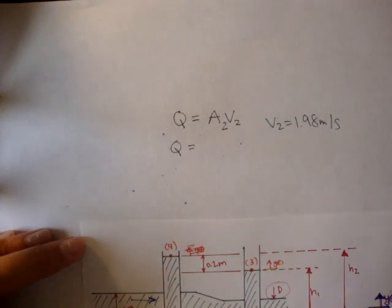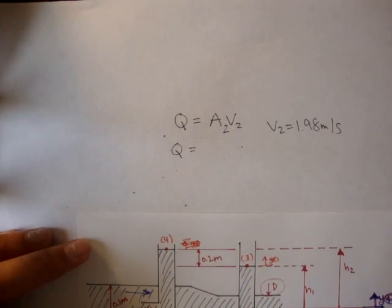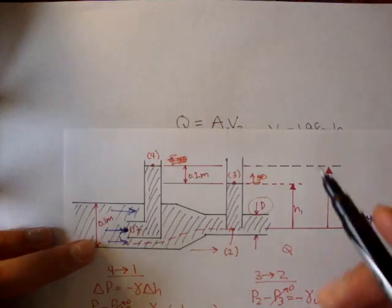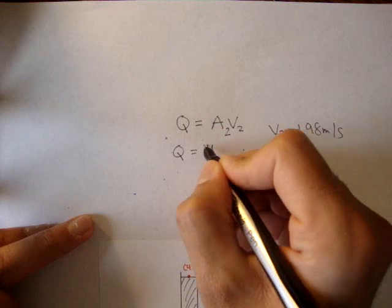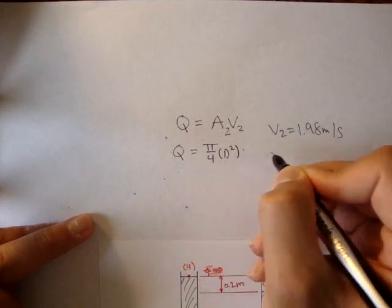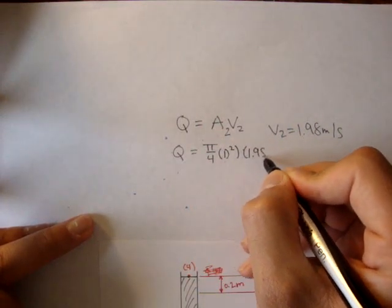And the area of 2 is, well, it's a circular tube, and the diameter is d. So the cross-sectional area is pi over 4 times d squared times 1.98.